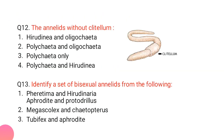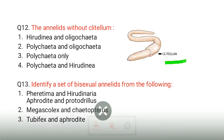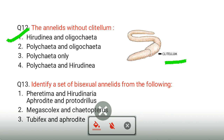The annelids without a clitellum: the clitellum is the prominent structure visible in the diagram. In Polychaeta, being aquatic forms, the clitellum is completely absent throughout the life cycle. In Oligochaeta (which includes earthworms), the clitellum is present throughout life, while in Hirudinea (leeches), it appears only during the breeding season.